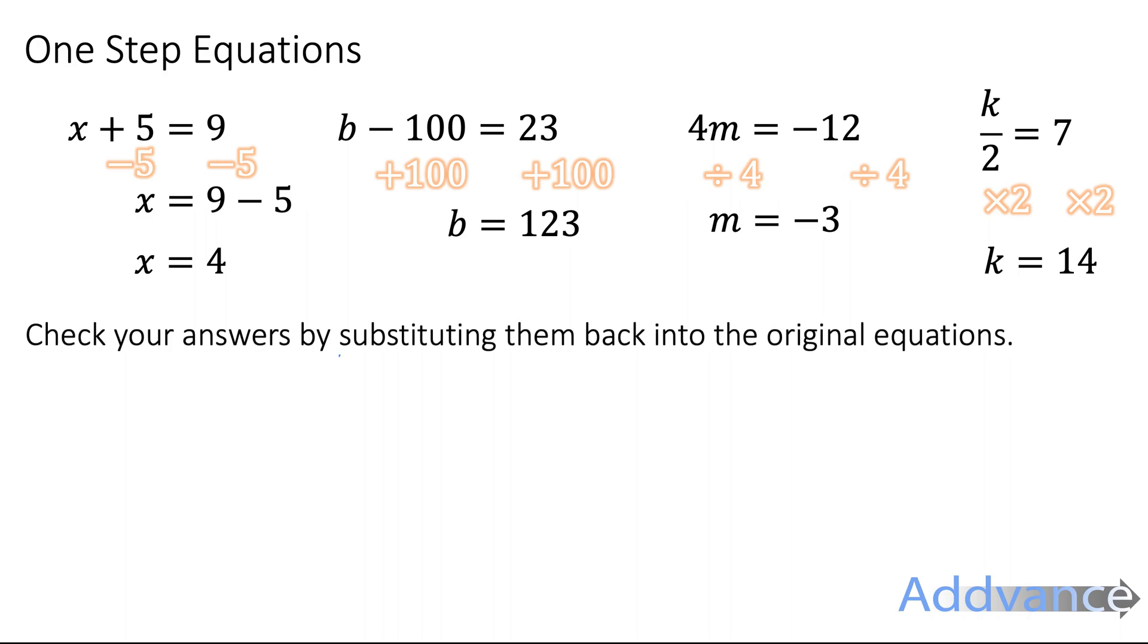Now to check your work, what you can do is put your answers back into the original equations. So for example, for the first one, I think the answer is 4. So I can put 4 in to the original equation where the x was. I get 4 plus 5 equals 9 and that makes sense to me. Similarly, you put 123 into the original equations. 123 minus 100 equals 23. Again, that makes sense.